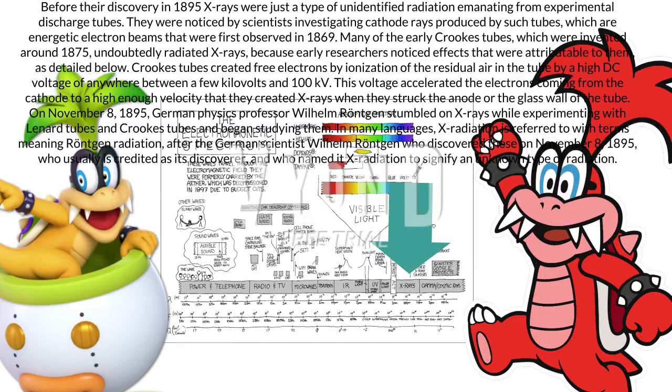Before their discovery in 1895, x-rays were just a type of unidentified radiation emanating from experimental discharge tubes. They were noticed by scientists investigating cathode rays produced by such tubes, which are energetic electron beams that were first observed in 1869. Many of the early Crookes tubes, invented around 1875, undoubtedly radiated x-rays. On November 8, 1895, German physics professor Wilhelm Röntgen stumbled on x-rays while experimenting with Lenard tubes and Crookes tubes and began studying them. X-radiation is referred to in many languages with terms meaning Röntgen radiation, after Wilhelm Röntgen who discovered them, and who named it x-radiation to signify an unknown type of radiation.